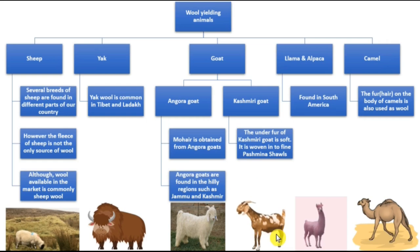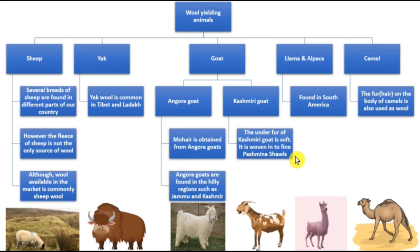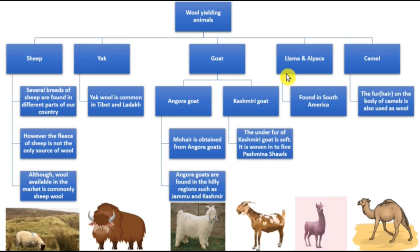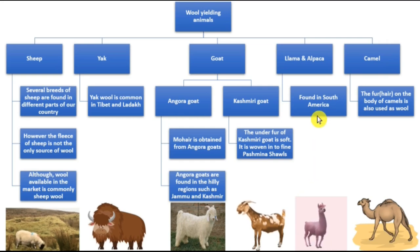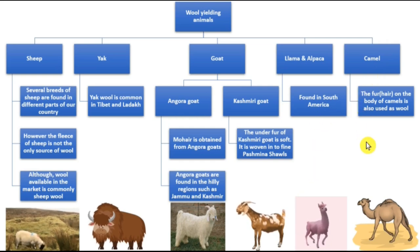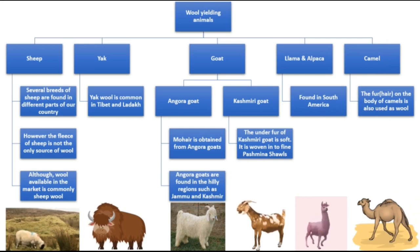The Kashmiri goat — the under fur of the Kashmiri goat is soft and is woven into fine Kashmiri shawls. You must have heard that Kashmiri shawls are very famous — they come from this goat. Then we have the llama and the alpaca, similar-looking animals found in South America. Then we have the camel — the fur on the body of camels is also used as wool.